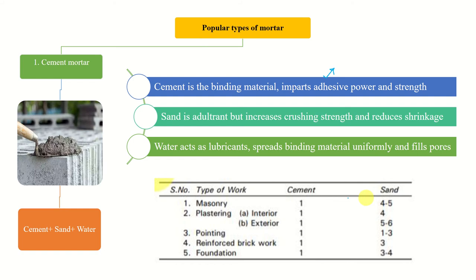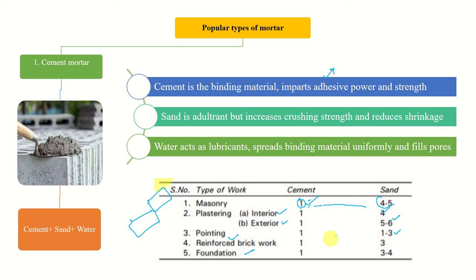The proportions for cement mortar: for brick masonry it should be 1:4.5, meaning one part cement to 4–5 parts sand. For plastering interior and exterior, sand parts are 4 to 5.6. For pointing, one part cement to 1–3 parts sand. Pointing is finishing the brick mortar joints for appearance. For reinforced brickwork, 1 part cement to 3 parts sand. For foundation, the ratio is 3 to 4.